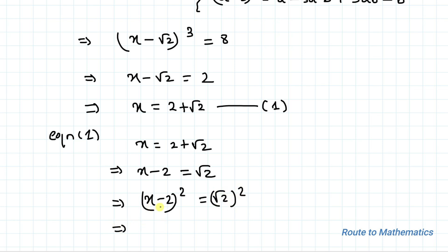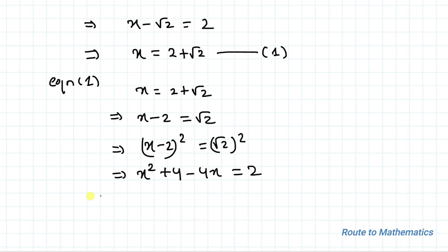Squaring both sides we have (x - 2)² = (√2)². Applying the algebraic identity (a - b)², this gives x² + 4 - 4x = 2, so x² - 4x + 2 = 0. Let's take this as equation 2.